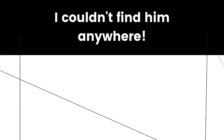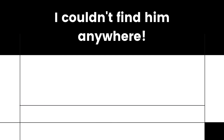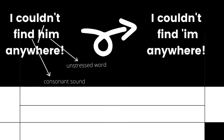We will go over a few examples and then you will have a practice. Listen to me say this sentence: 'I couldn't find him anywhere.' Notice I did not say 'I couldn't find him anywhere.' I said 'I couldn't find him anywhere.' That is because the word 'him' is unstressed, and the word before it, 'find,' ends in a consonant sound. So we say 'I couldn't find him anywhere.' And remember, 'him' is one of those words pretty susceptible to H-elision.